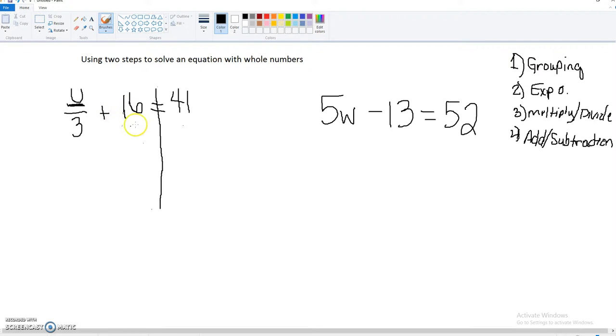So since this is a positive 16, we're going to do negative 16, or subtract 16. And whatever we do to one side, we must do to the other. So those cancel, which is our goal.